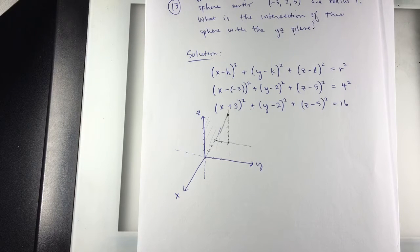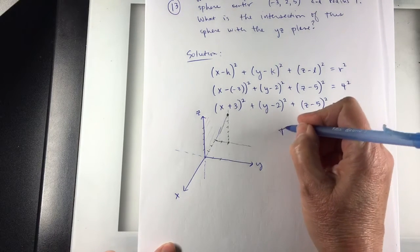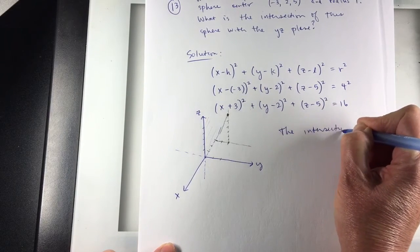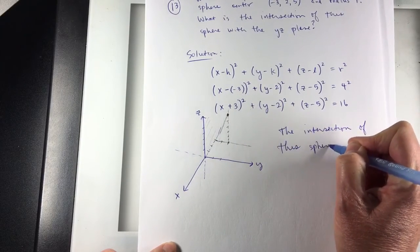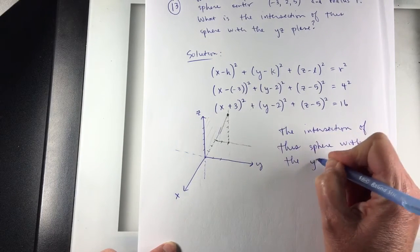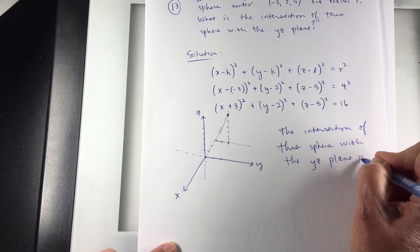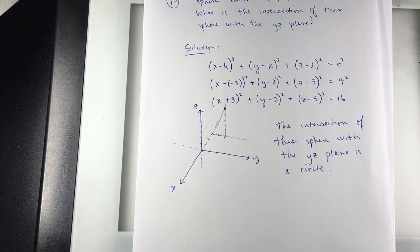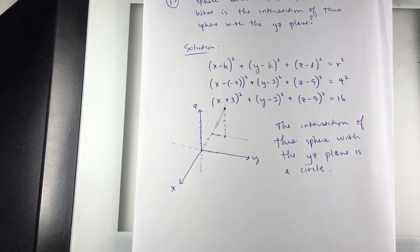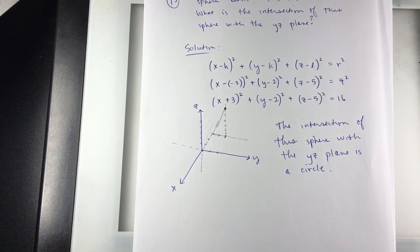So that's all I'm interpreting from this question. The intersection of this sphere with the yz plane is a circle. I'm not reading into the question that they want the equation of that circle. And if I look in the back of the book, let me see if the author gave the equation of the circle. Oh man, okay.